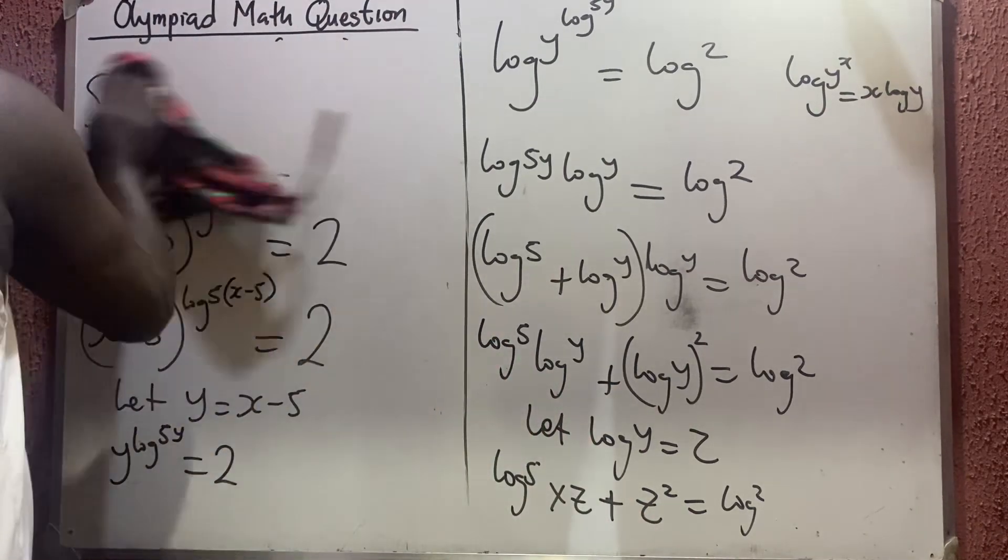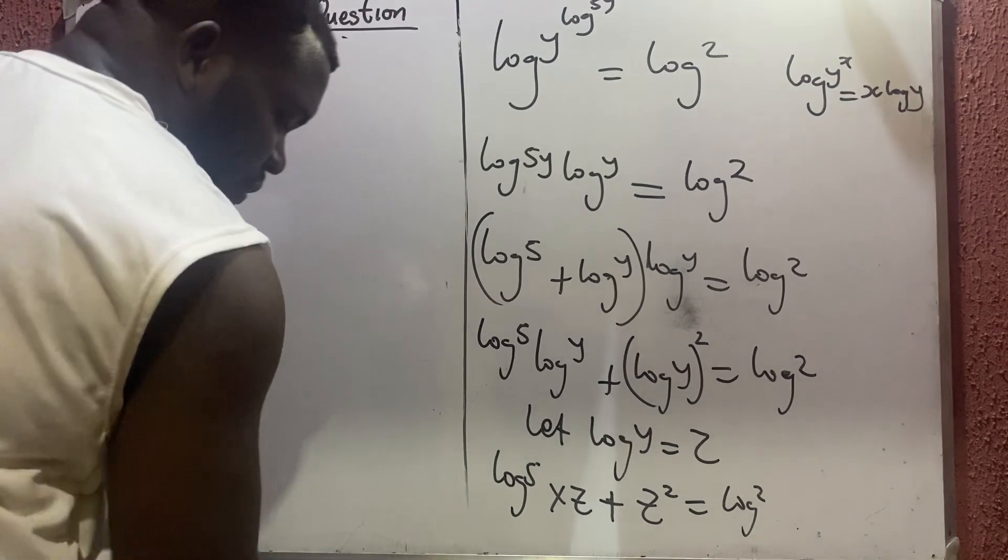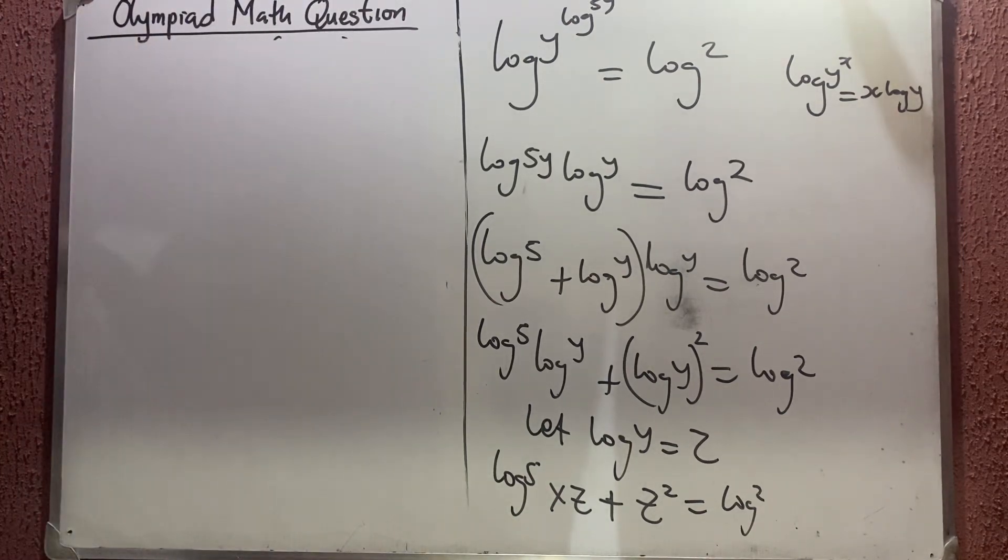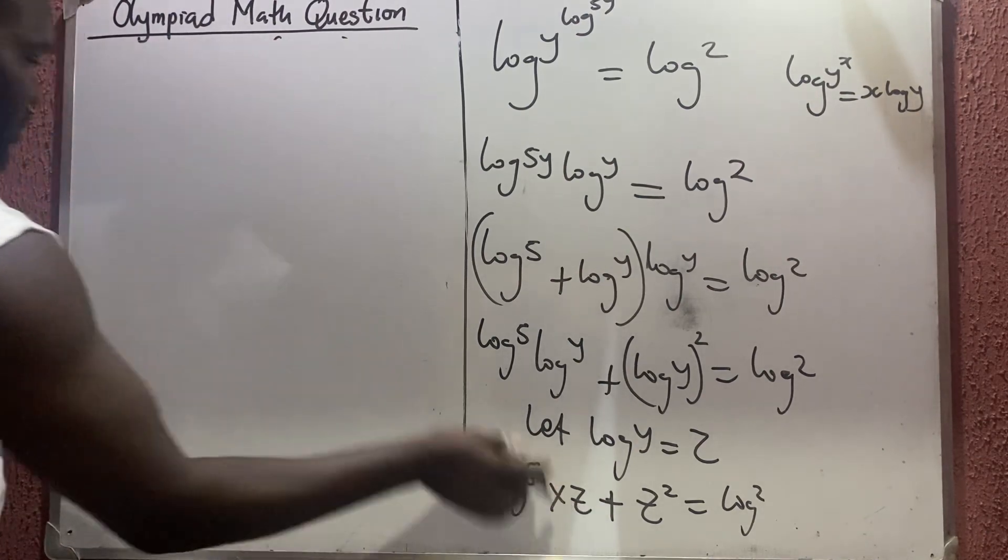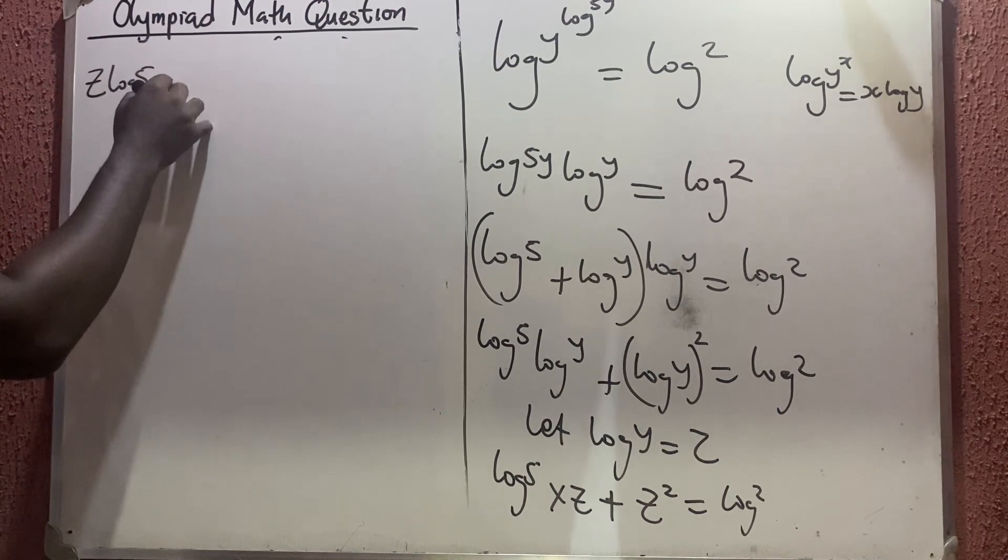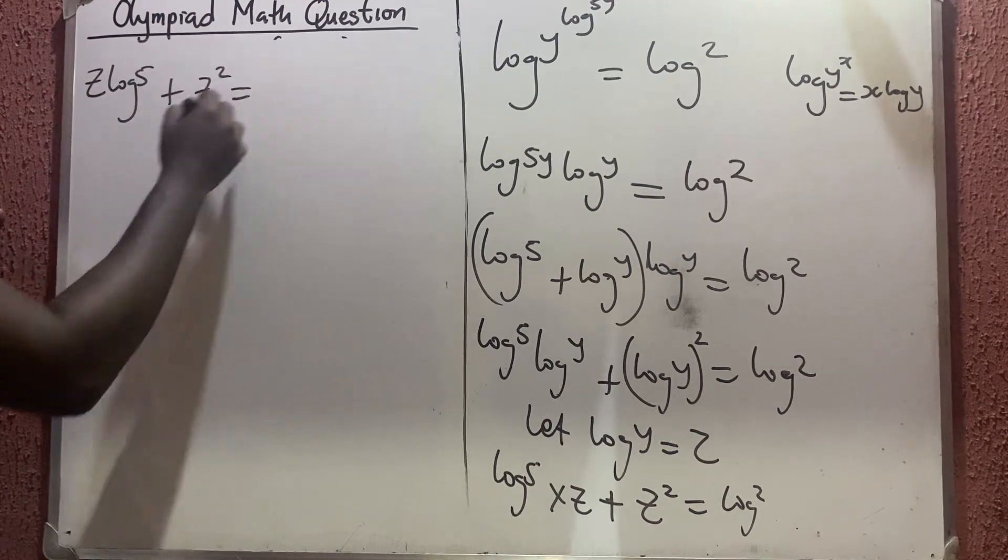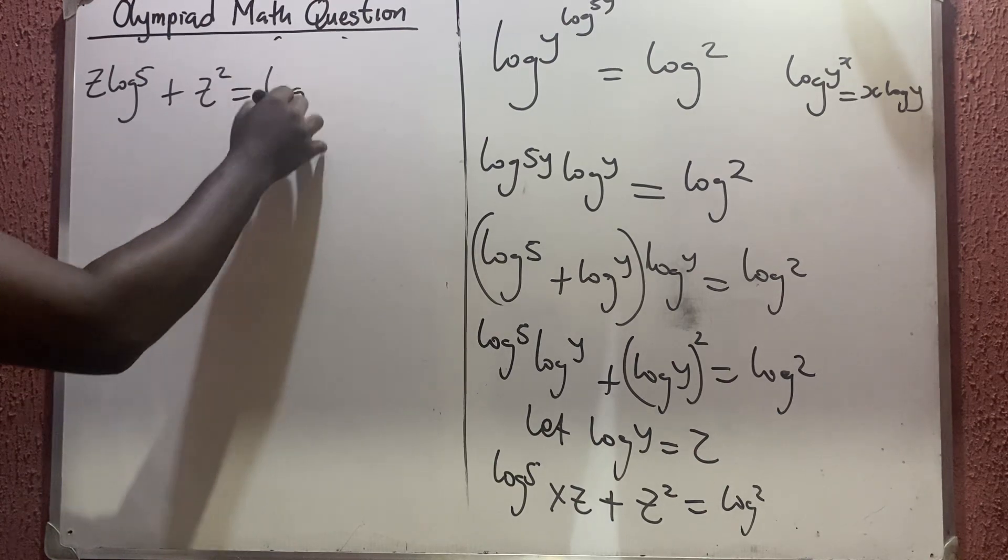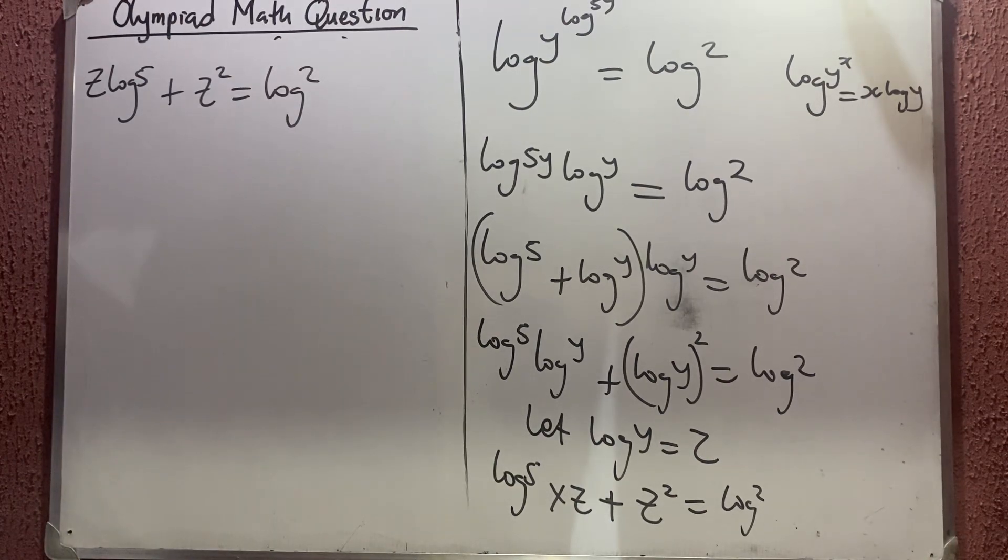I'm going to have z log 5 plus z squared equals log 2.